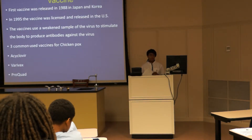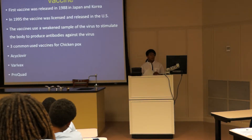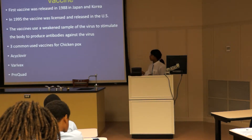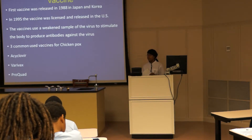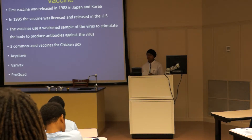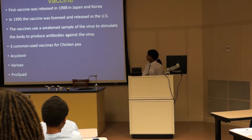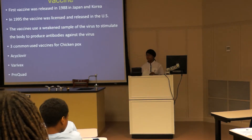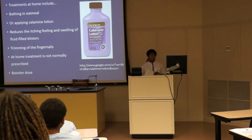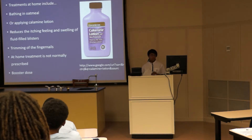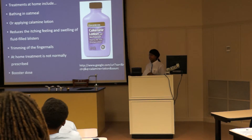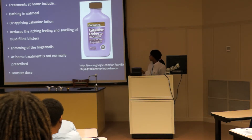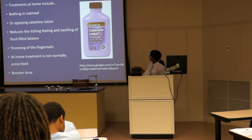Prevention and Treatment. The first vaccine was released in 1988 in Japan and Korea. In 1995, the vaccine was licensed and released in the United States. The vaccines use a weakened sample of the virus to stimulate the body to produce antibodies. A research project done between 1995 and 2000 in three communities — Tulip Valley, California; Travis County, Texas; and West Philadelphia, Pennsylvania — documented the vaccine's effectiveness. The three commonly used vaccines are acyclovir, Varivax, and ProQuad. At-home treatments include bathing in oatmeal or applying calamine lotion, which reduces itching and swelling of fluid-filled blisters. Trimming fingernails can also prevent children from scratching sores and infecting others. At-home treatment is not normally prescribed for too long because without a booster dose, a child can get a more severe infection. Here is a picture of calamine lotion.